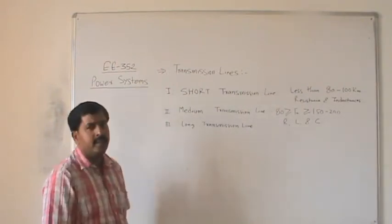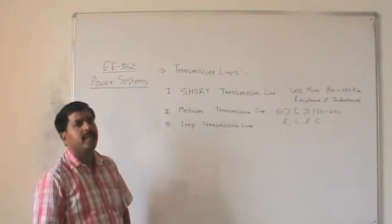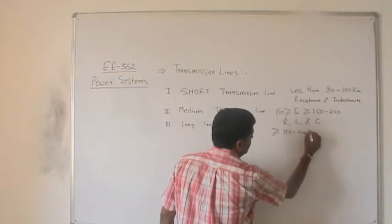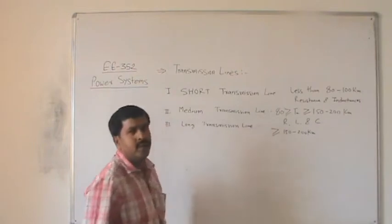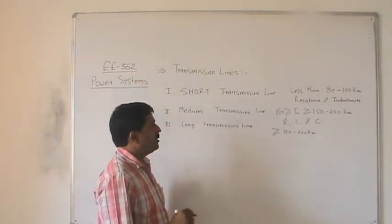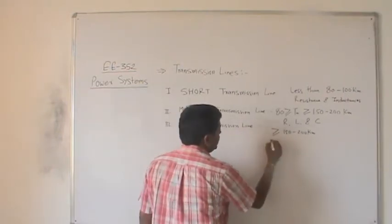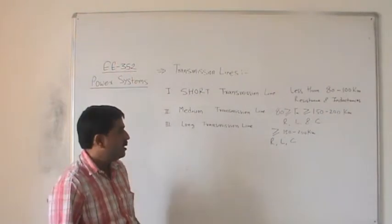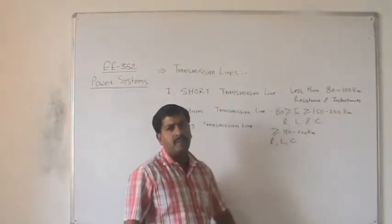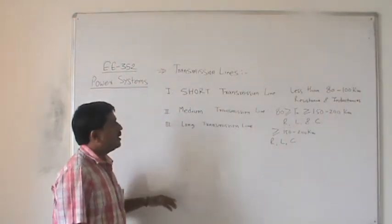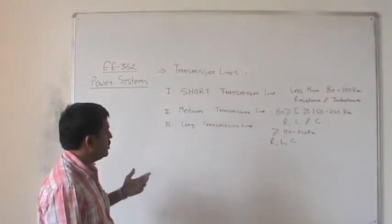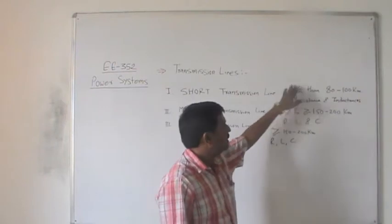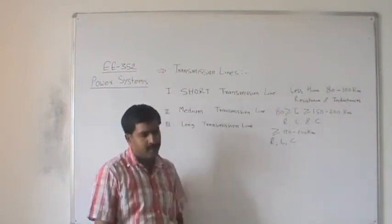For the long transmission line, if the length is more than 150 to 200 km, it is termed a long transmission line. For its analysis, we take resistance, inductance, and capacitance, and the capacitor is treated as a distributed parameter. So there are three types: short, medium, and long, depending upon the distance.